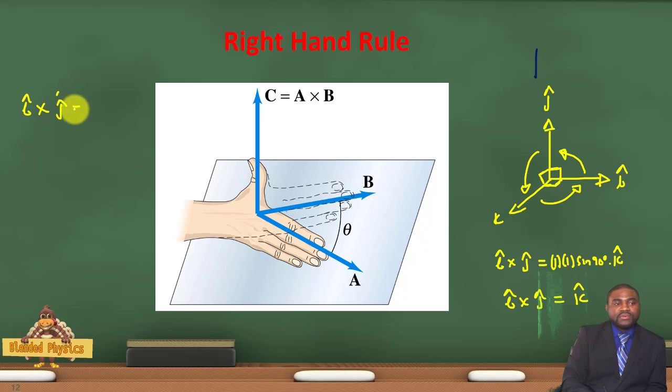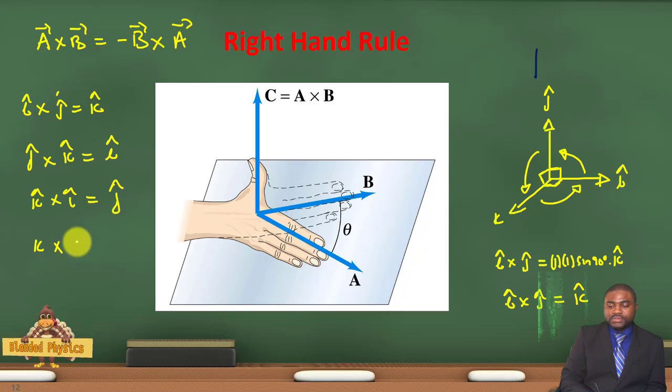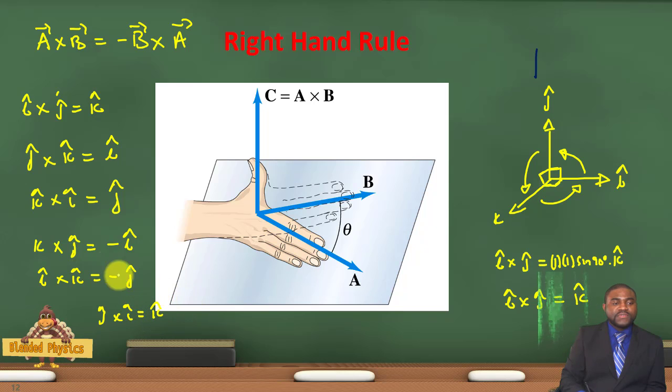In other words, i cross j equals k, j cross k equals i, and k cross i equals j. Now because A cross B is equal to negative B cross A, this implies that k cross j will be equal to negative i, i cross k will be equal to negative j, as well as j cross i will be equal to negative k.